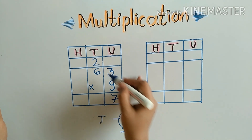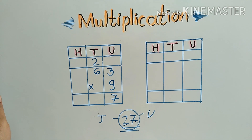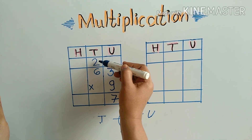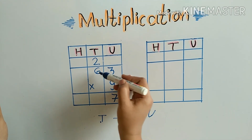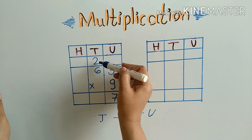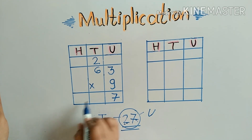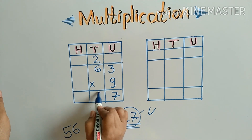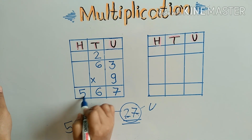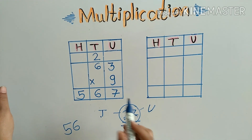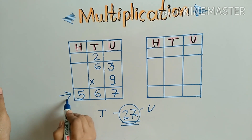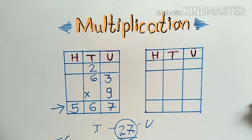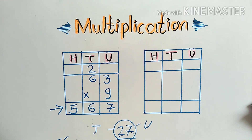9 sixes are 54. To 54 we will add the carry over 2. 54 plus 2 is 56. So we write 56. Our answer is 567. Let's solve another example.